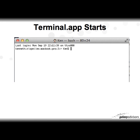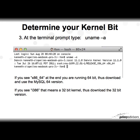Double-click the Terminal app to start it. At the terminal prompt, type: uname -a. The Mac will tell you what kernel you have. In this example I have a 64-bit kernel, so I will download the MySQL 64-bit version. If you see i386, that means you have a 32-bit kernel and should download the 32-bit version.